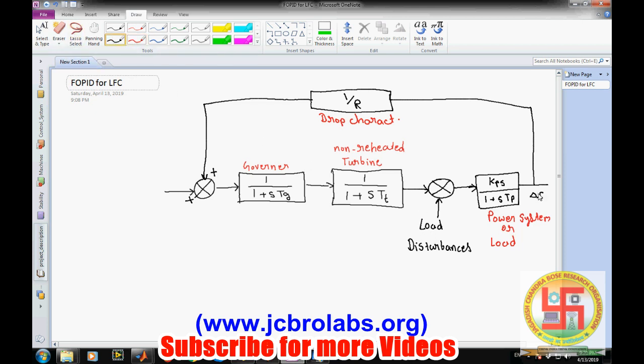This is the simplest block diagram of any power system. Now our requirement here is if there are any variations in this load disturbances or any variations, this delta f should be equal to zero. That means there should be no change in frequency, or if due to disturbances it is occurring, they should be eliminated as soon as possible.